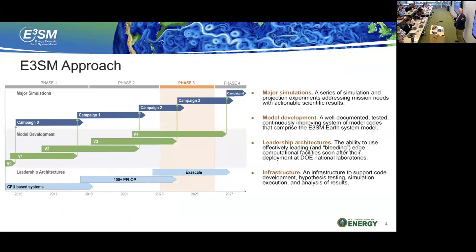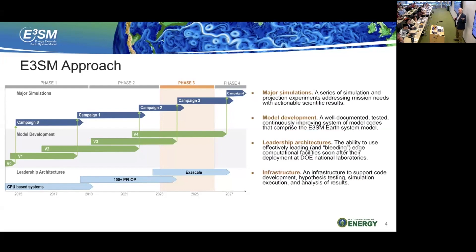When we started, this is very close to our original roadmap and we've stuck to it — the dates have slipped but the paradigm hasn't. The idea was we would develop a model to be ready for the next generation of computers when it appeared. We also adopted the paradigm that many numerical weather prediction centers use: a production model, a model you're testing, and a model you're developing. Model development takes anywhere from five to ten years, but we want to release one every three years, which enables this paradigm.